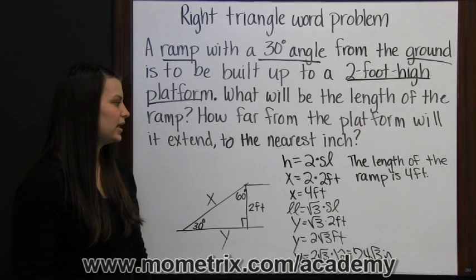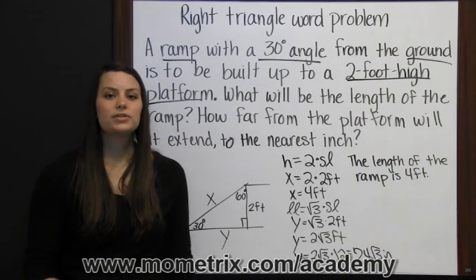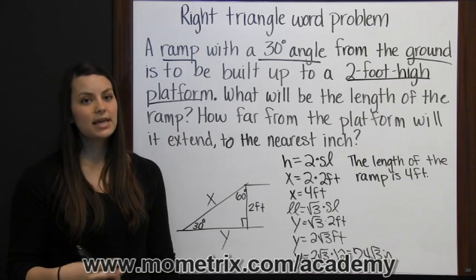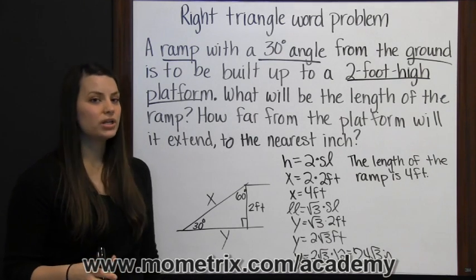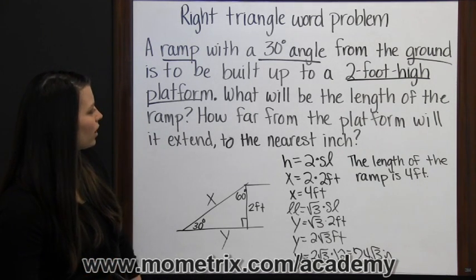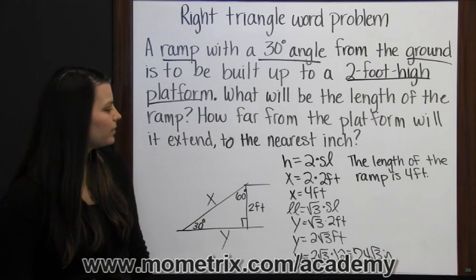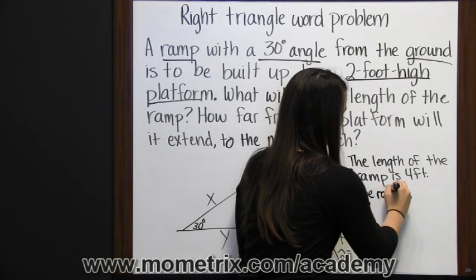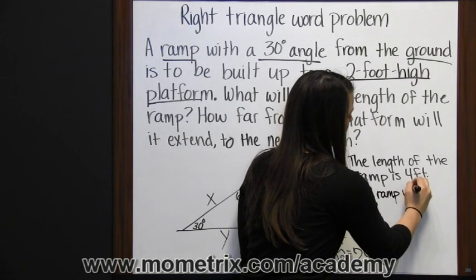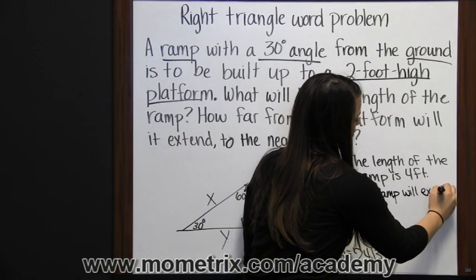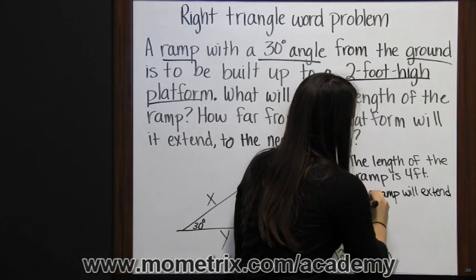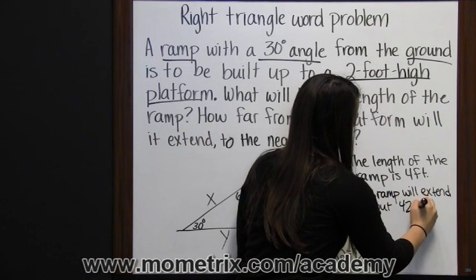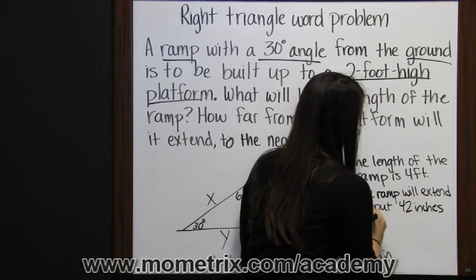But they didn't ask for it in simplest radical form, so then we'd actually want to calculate what twenty-four square roots of three inches is, and it's about forty-two inches. Therefore, how far from the platform will the ramp extend? The ramp will extend about forty-two inches from the platform.